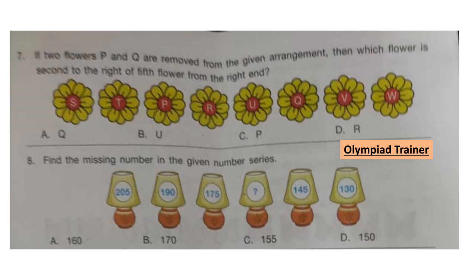Question 7: If two flowers P and Q are removed from the given arrangement, then which flower is second to the right of the fifth flower from the right end? First remove flowers P and Q, then find the fifth flower from the right end, which is flower T. Then find the second flower to the right of T, which is flower U. So option B is the answer.